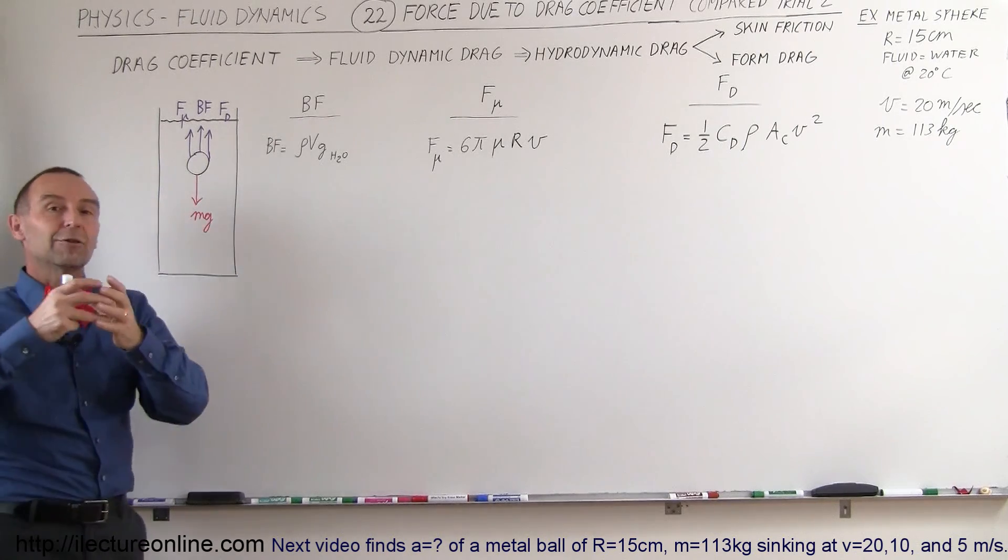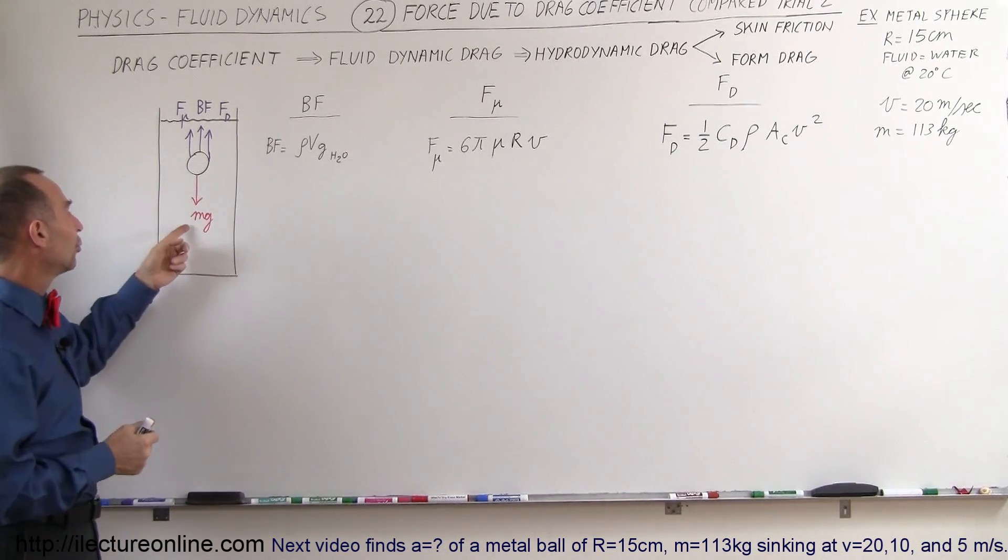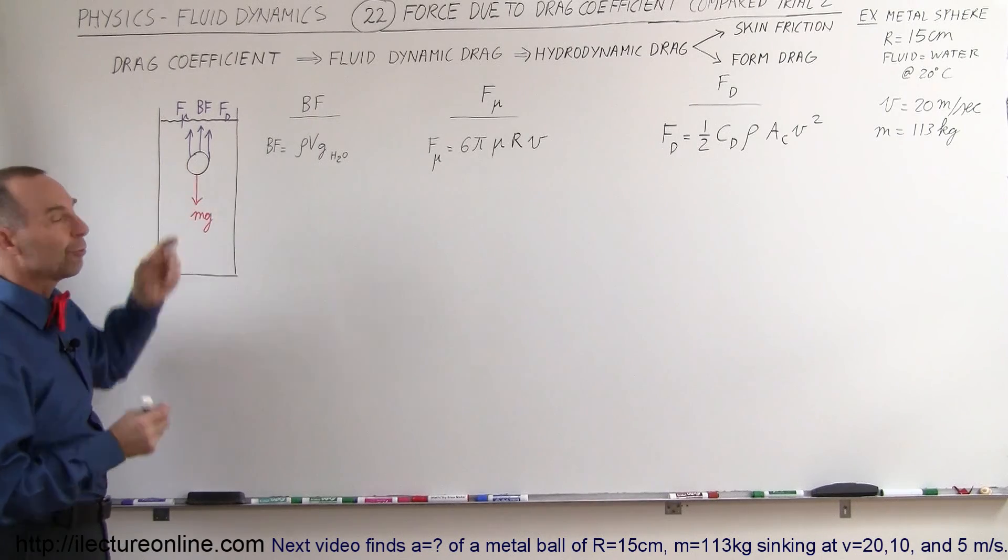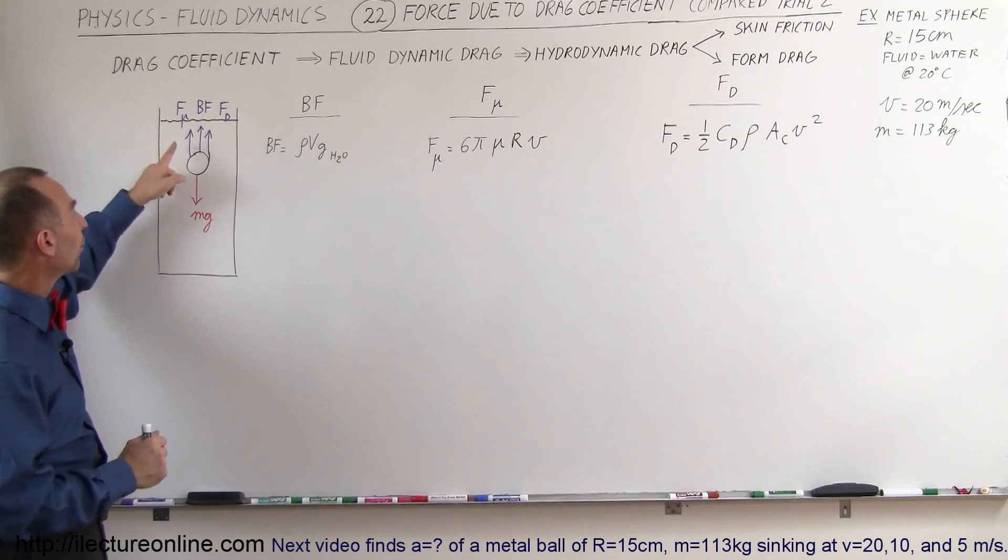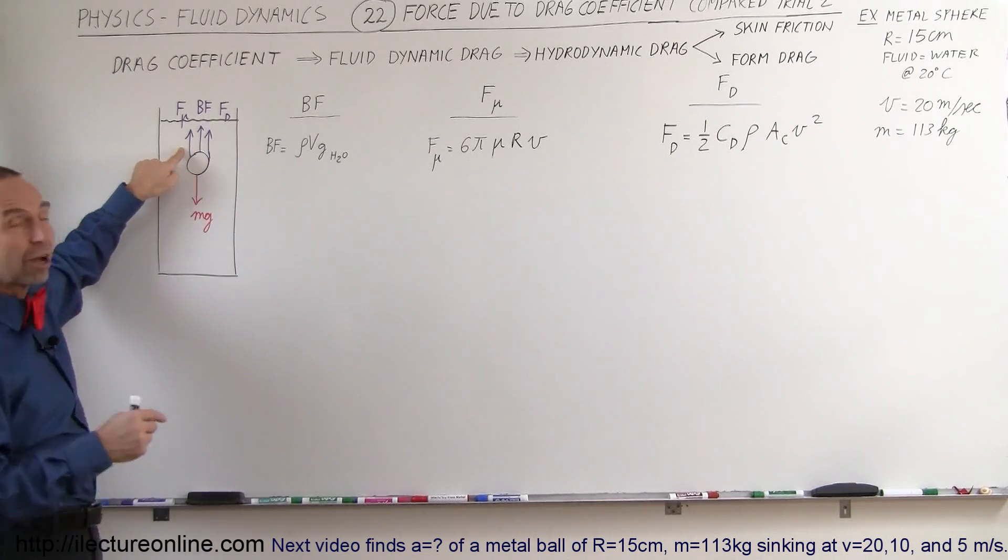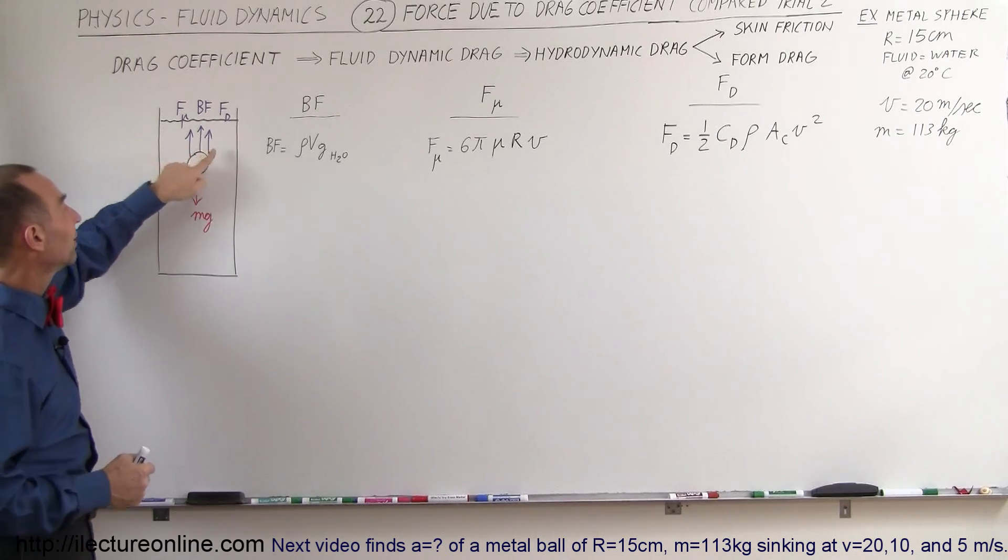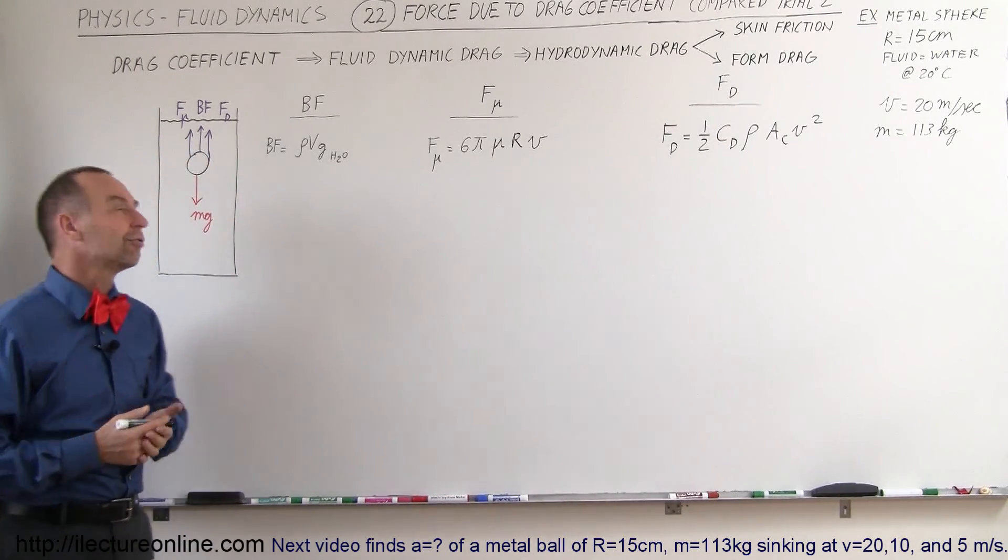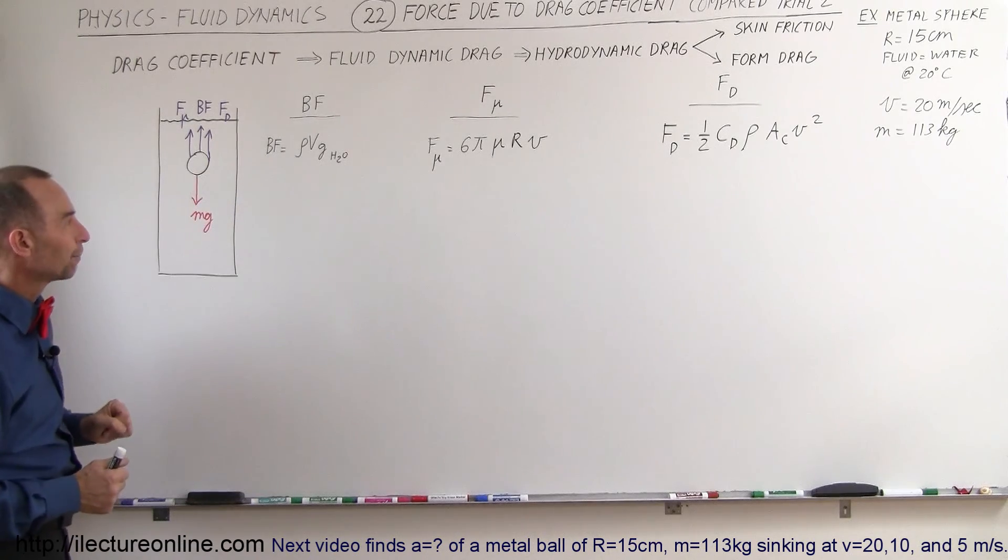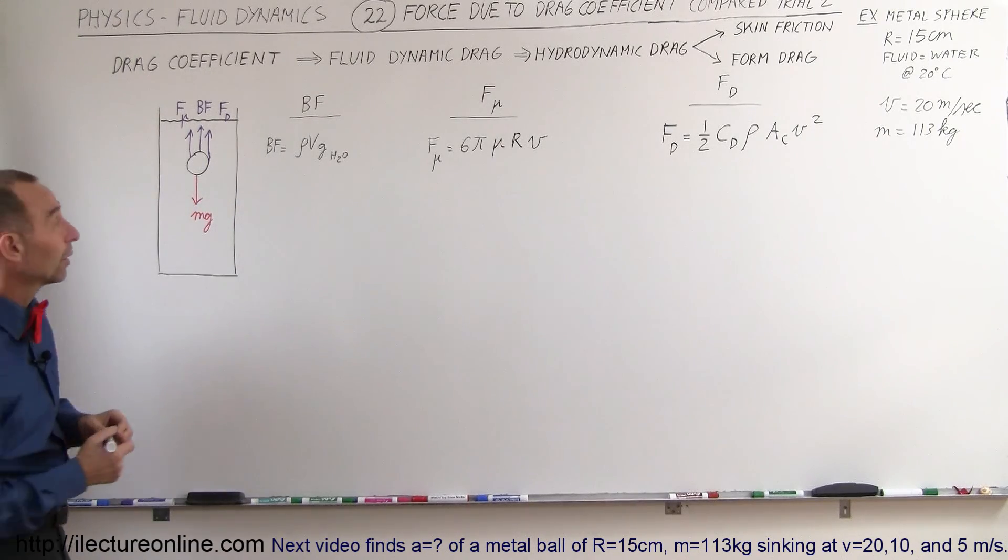Well of course gravity will pull down equal to the weight of the object, and then the three forces pushing against gravity will be the buoyancy force, the force caused by the viscosity of the fluid, and the drag coefficient factor in the fluid as well. All right, so let's calculate those three quantities.